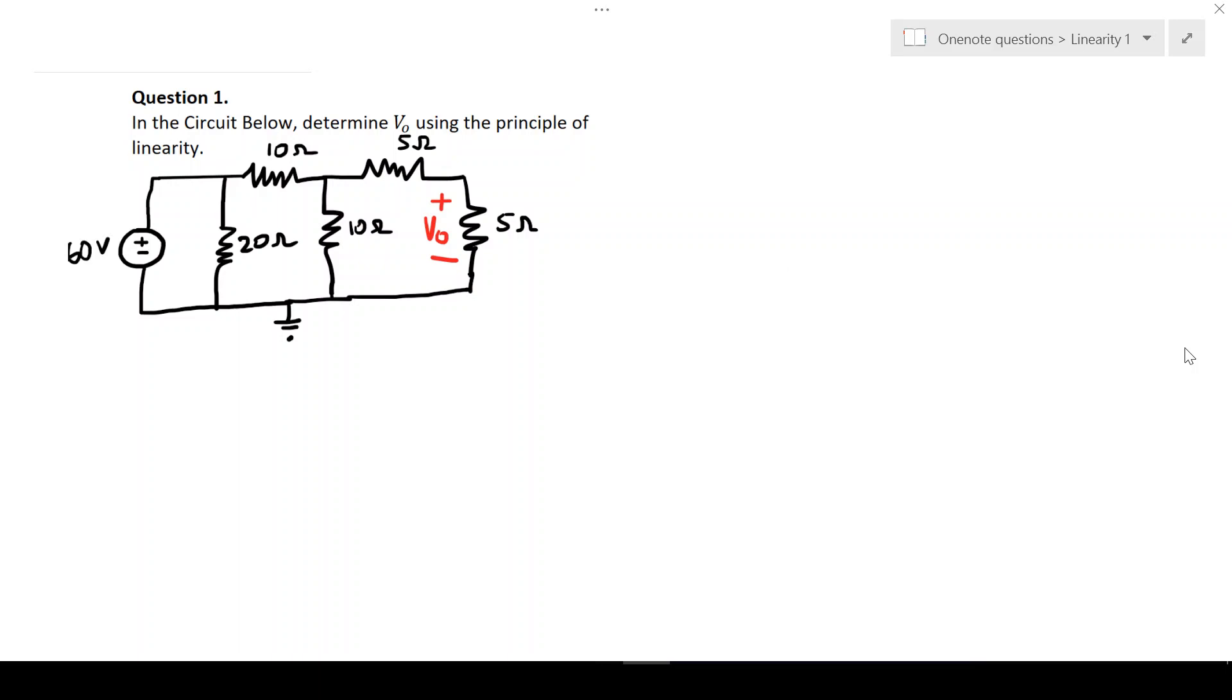With the principle of linearity, we need to assume a value of V₀ and then determine what the source value would be based on that assumed value. Once we have the calculated source value, we can determine the ratio between it and the actual source value to find what V₀ should actually be. So let's begin.